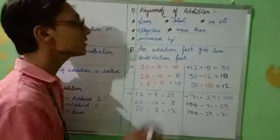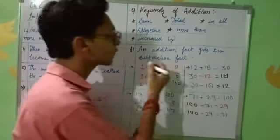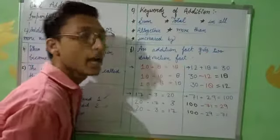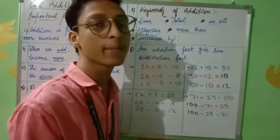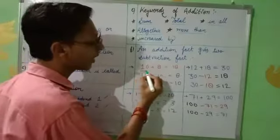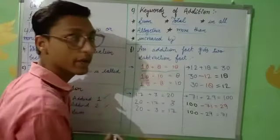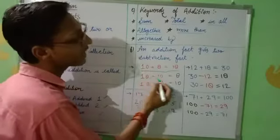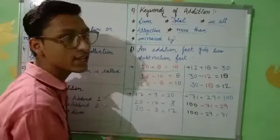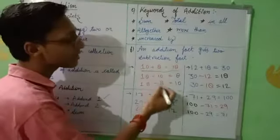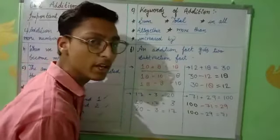An important point is: one addition fact gives two subtraction facts. Like if we have 10 plus 8 equals 18, then 18 minus 10 will be 8, and 18 minus 8 will be 10.